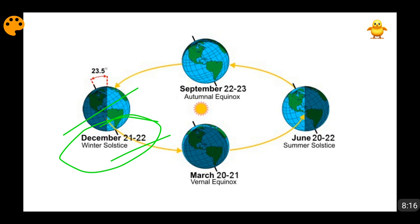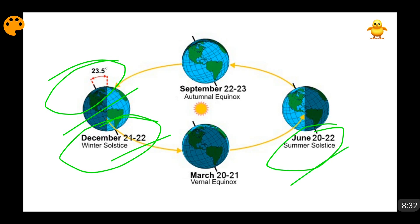In the Southern Hemisphere, December 21 is the longest day, but at the same time in the Northern Hemisphere it is winter. This is why 21–22 December is known as winter solstice — despite the fact that in the Southern Hemisphere it is summer, in the Northern Hemisphere it is winter. All the statistical analysis and reference we are taking is with reference to the Northern Hemisphere.